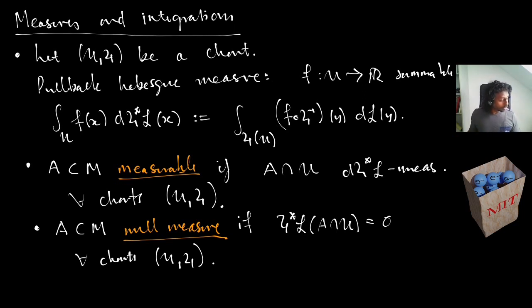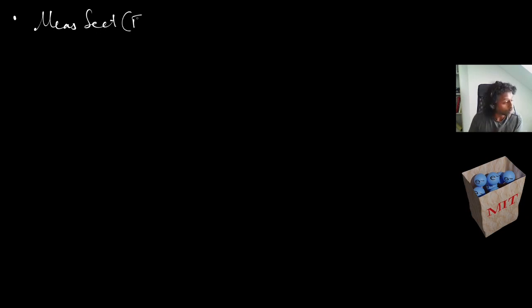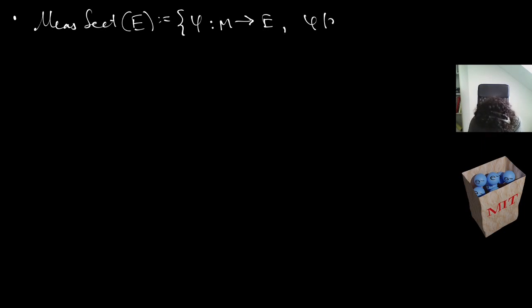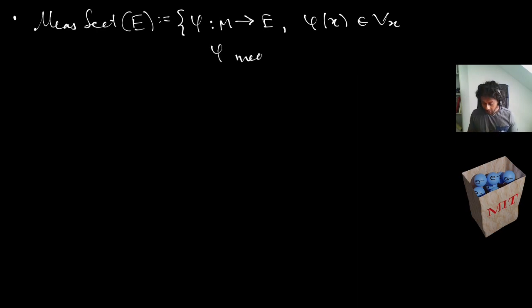So a manifold doesn't just afford us a differentiable structure — it also affords us an invariant measure structure. This allows us to talk about 'almost everywhere' and measurable functions without a fixed reference measure. In particular, we can define measurable sections of a vector bundle as those φ: M → E with φ(x) ∈ E_x whose coefficients are measurable inside each trivialization.